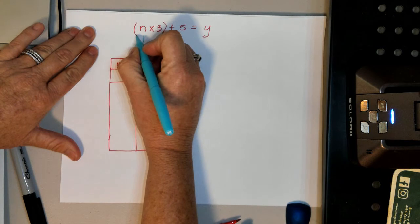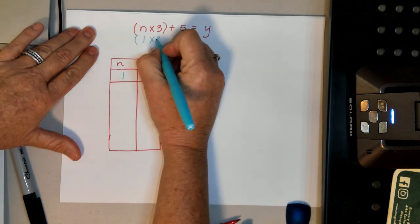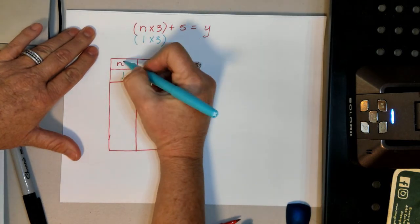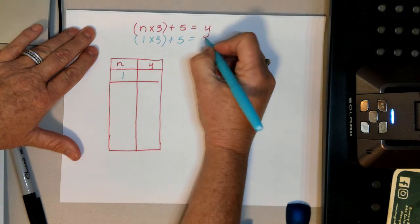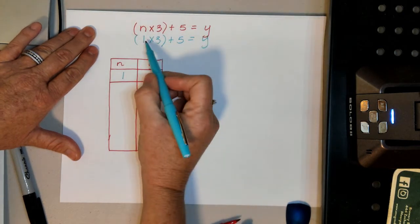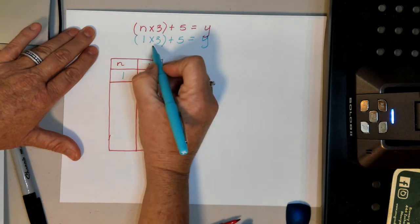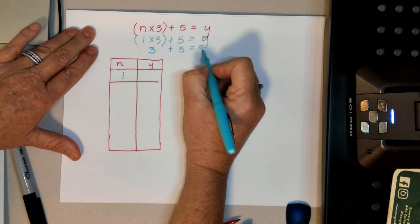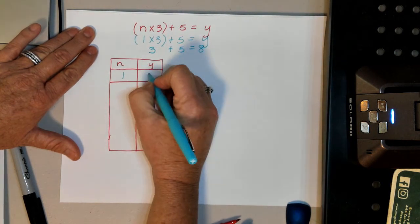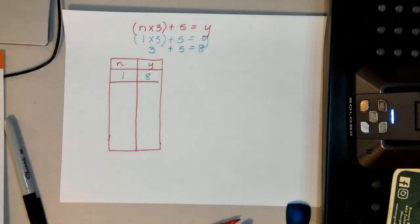And then you're going to solve the problem, and we always do what is in the parentheses first. You're just going to simply put it in here. So it's going to go, 1 times 3, we're just putting the 1 for n, plus 5 equals y. So I'm going to go ahead and do this. 1 times 3 is 3, plus 5 equals 8. So y is 8. There you go.